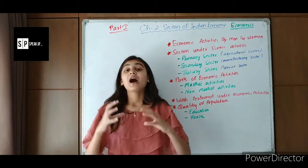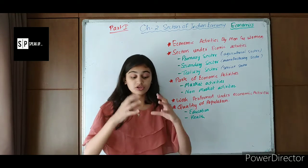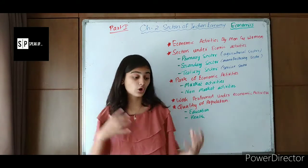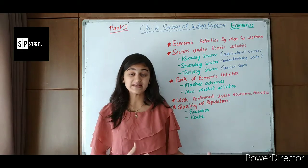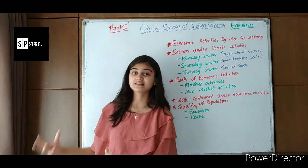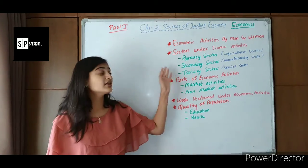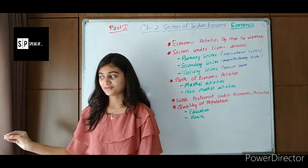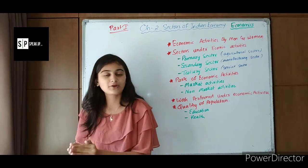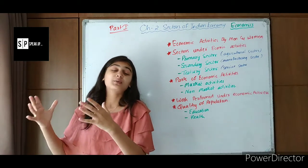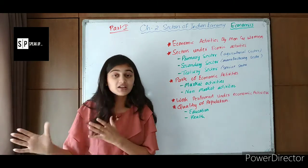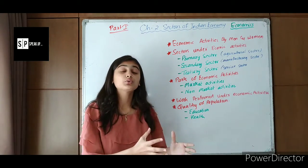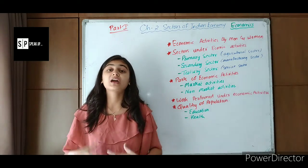These raw materials from the primary sector cannot be used directly as finished goods. To convert raw materials into finished goods, we need a manufacturing sector, which is known as the secondary sector. The secondary sector handles all manufacturing work. For example, factories convert ore into petroleum or into a particular metallic form — that manufacturing activity helps us obtain finished goods.